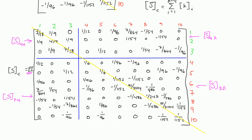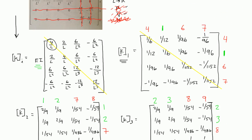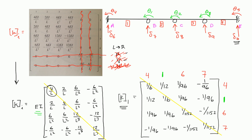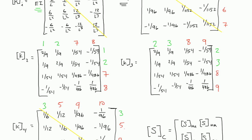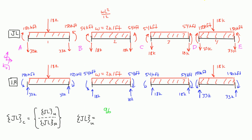Our second degree of freedom, theta 2, is a rotational degree of freedom at joint C. On the joint load diagram, at C we have positive 54 and negative 54, meaning the joint load at C unrestrained is 0 — 54 minus 54 is 0. Then at D, we have positive 54 minus 150, giving us negative 96 kip-foot. That completes our joint load unrestrained values, in units of kip-foot.